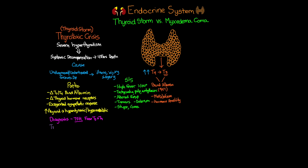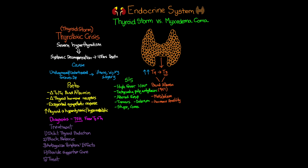If we know or suspect a patient is in thyroid storm crisis, they should be managed in the ICU. Treatment revolves around five main things: first, inhibit thyroid hormone production; second, block the release of thyroid hormone; third, antagonize the peripheral effects of thyroid hormone; fourth, provide supportive care; and fifth — probably most obviously — treat the precipitating cause of the crisis.